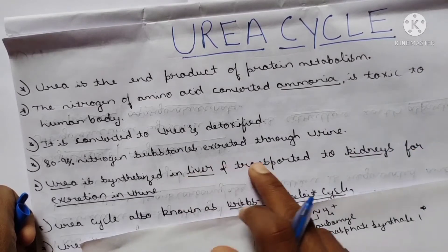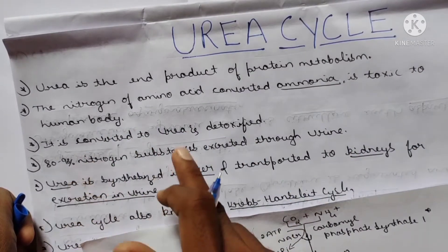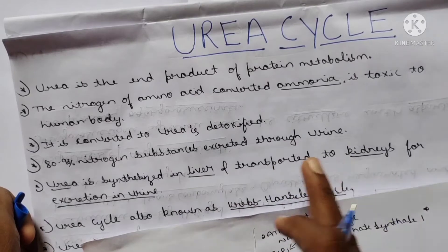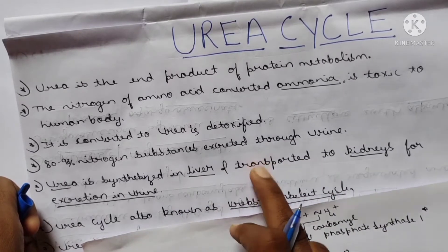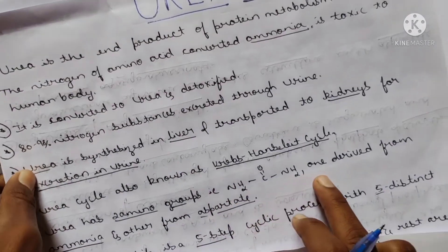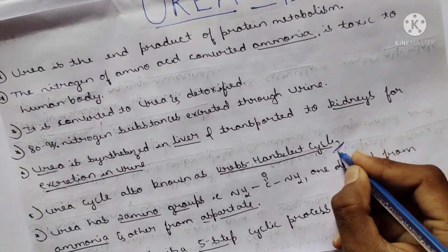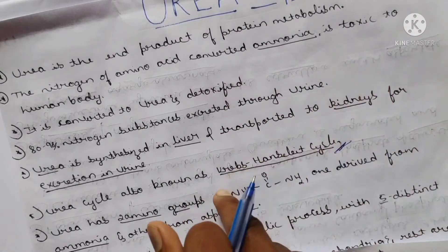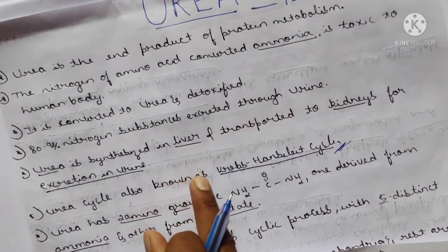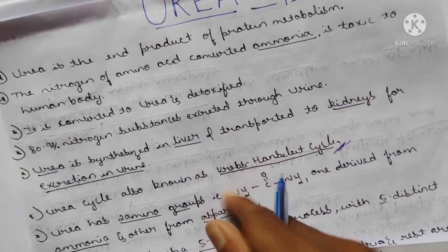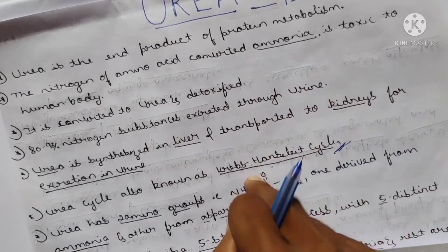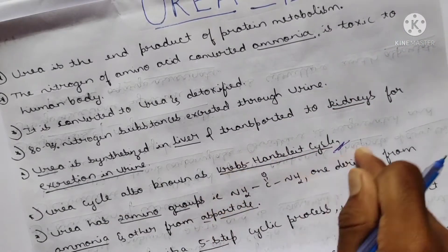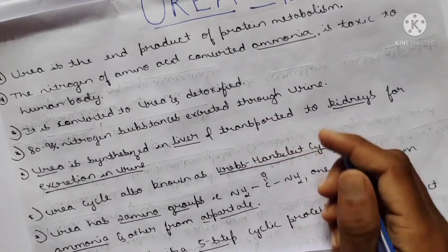Urea is synthesized in the liver and transported to the kidneys for excretion in urine. The urea cycle is also known as the Krebs-Henseleit cycle - this is very important. In examination, if they ask about the Krebs-Henseleit cycle, do not confuse it with the Krebs cycle, which is the TCA or tricarboxylic acid cycle. The Krebs-Henseleit cycle refers specifically to the urea cycle.